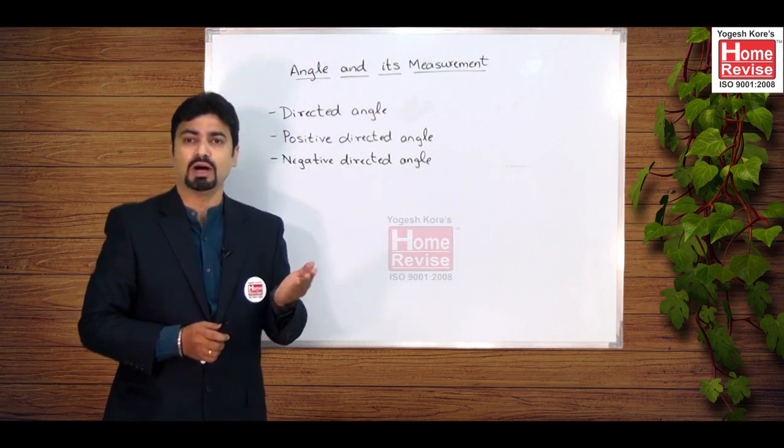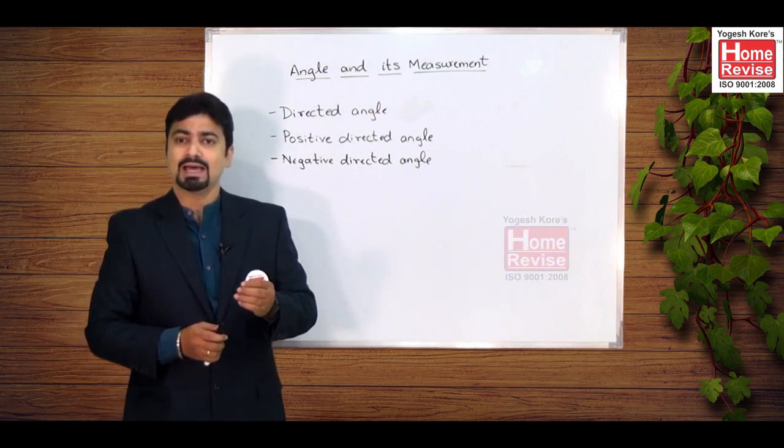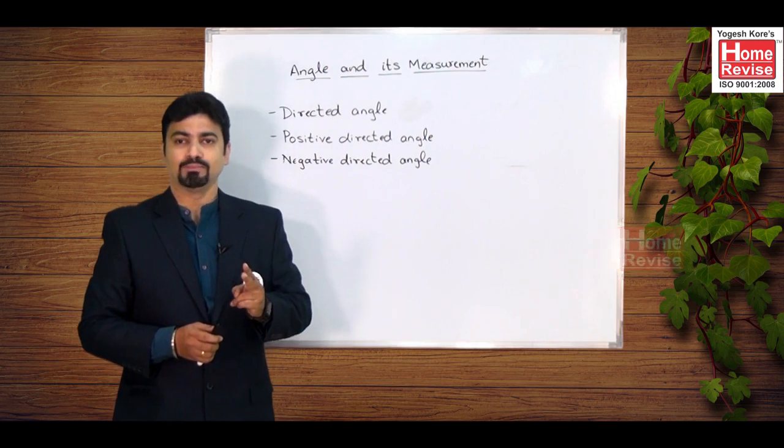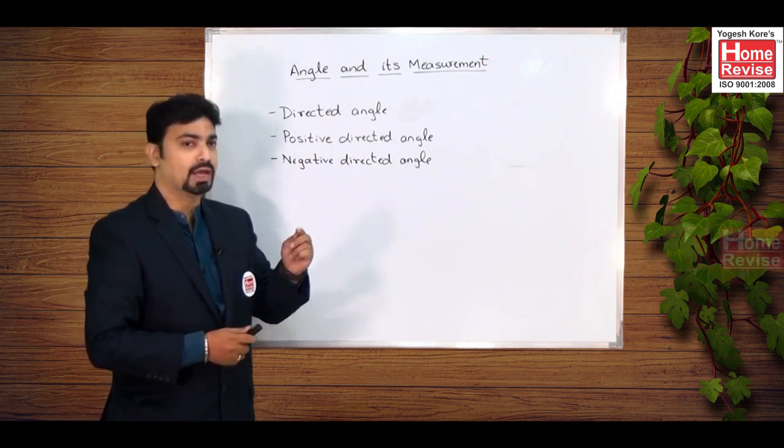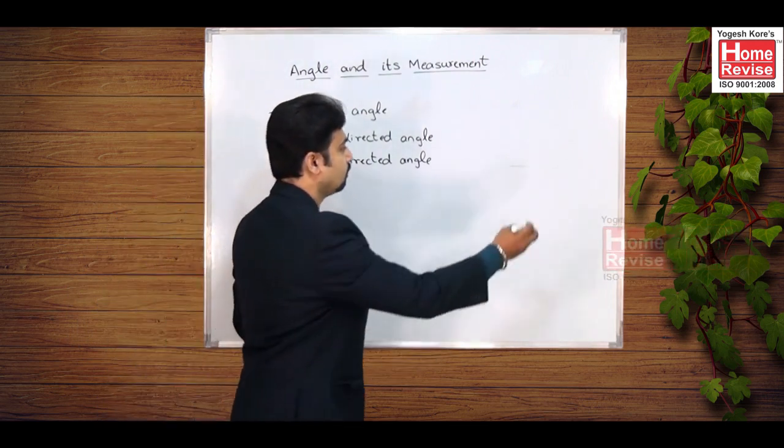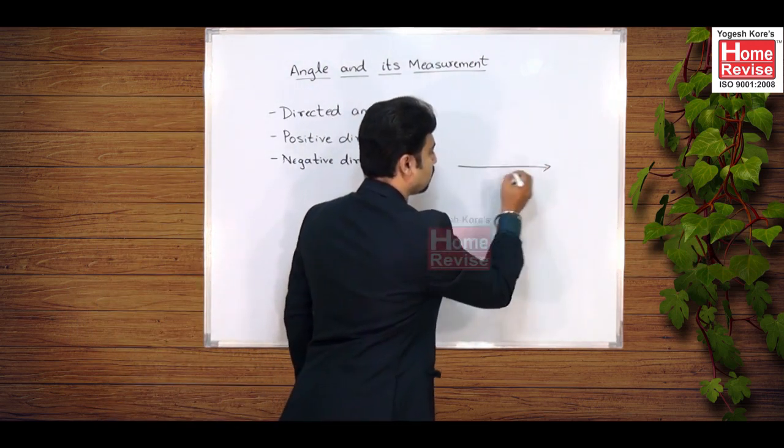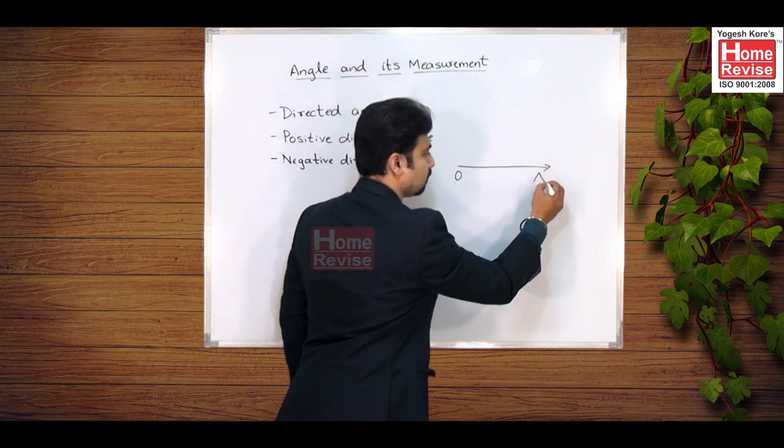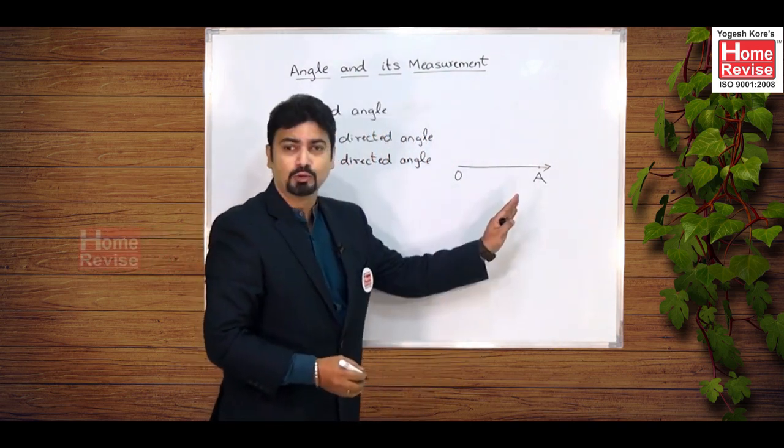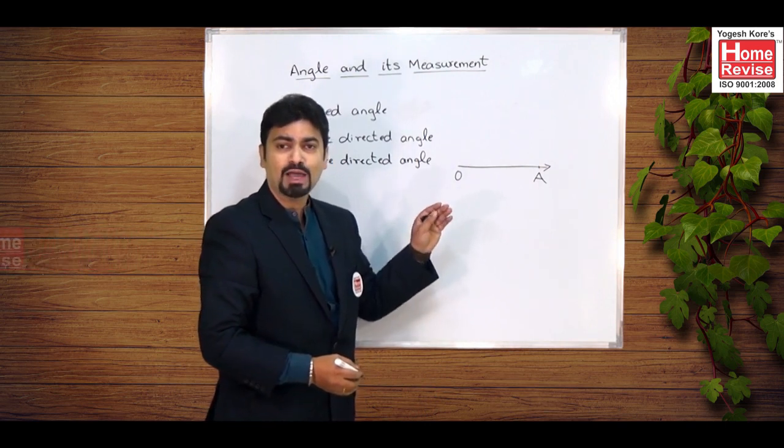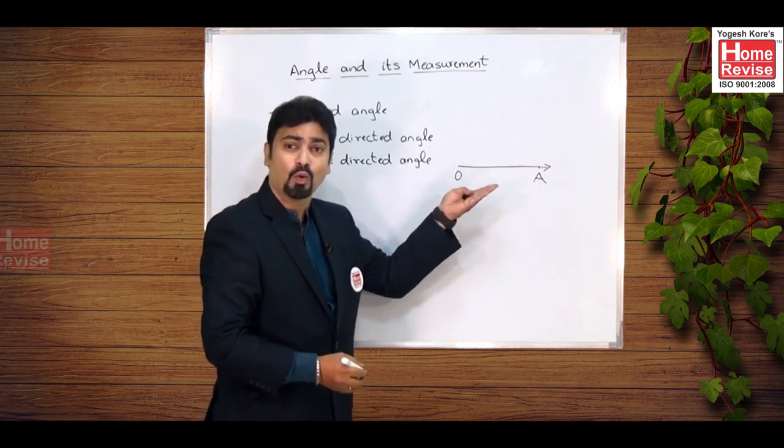Now students, angle has two arms. Let us consider that we have an initial arm, say OA. So let us consider OA to be the initial arm. Now if I rotate this ray OA about the point O, let us rotate it in anticlockwise direction.